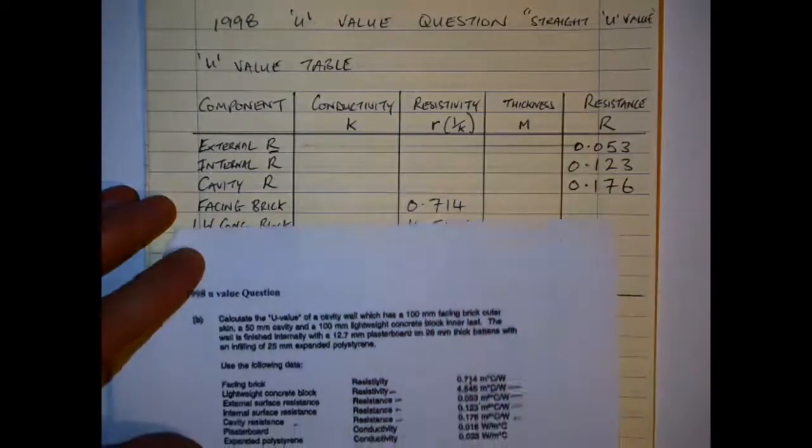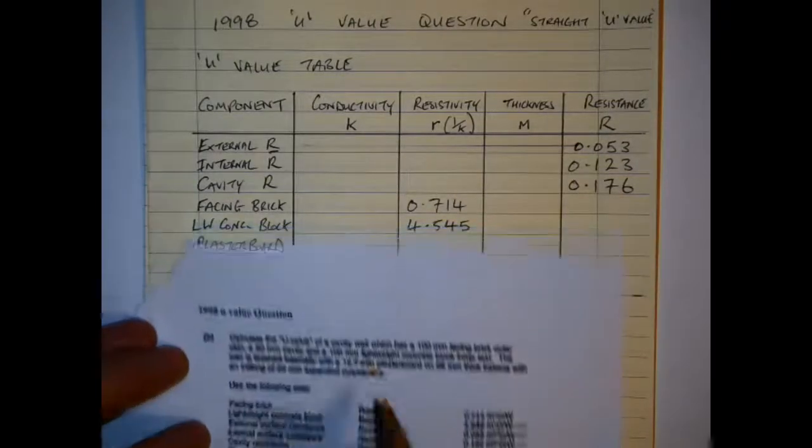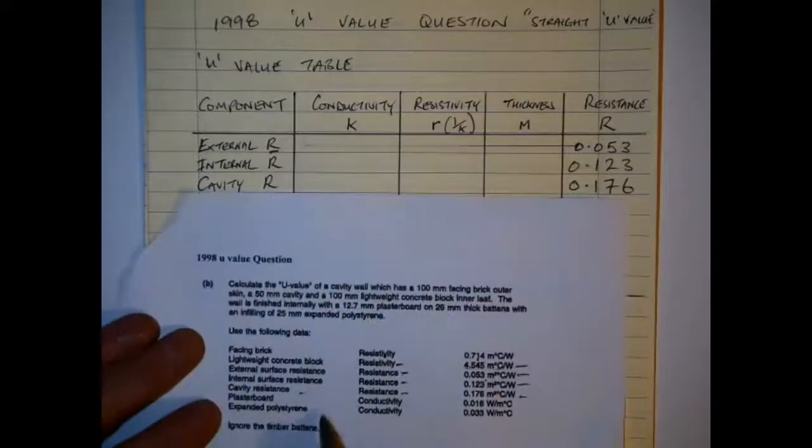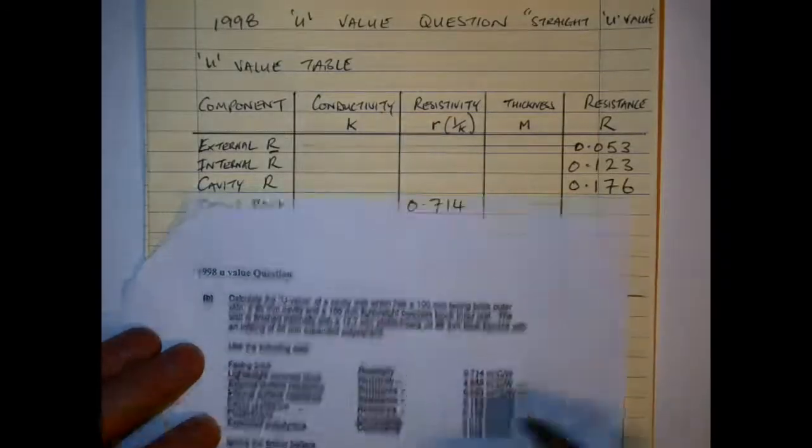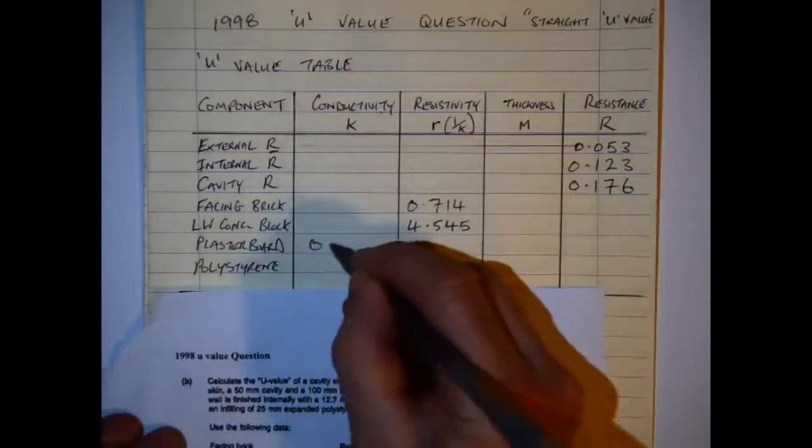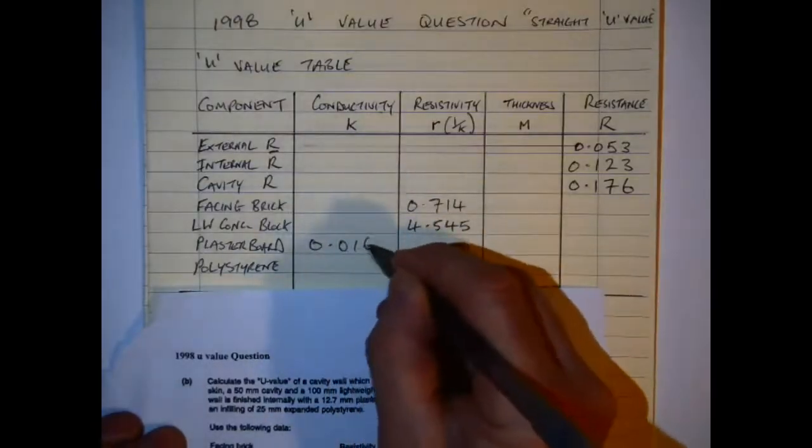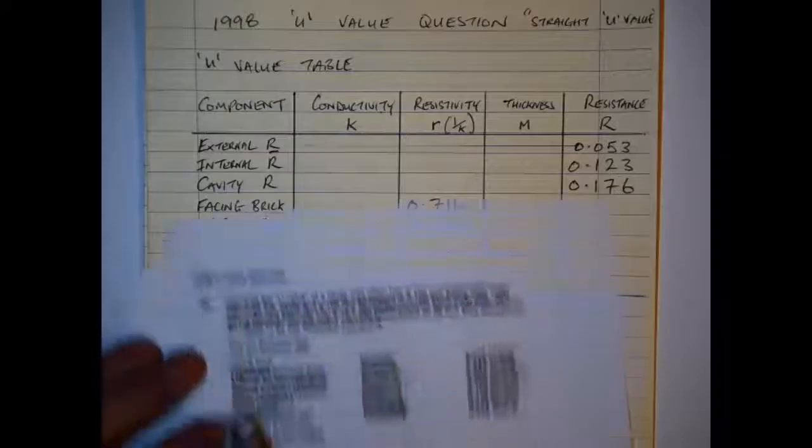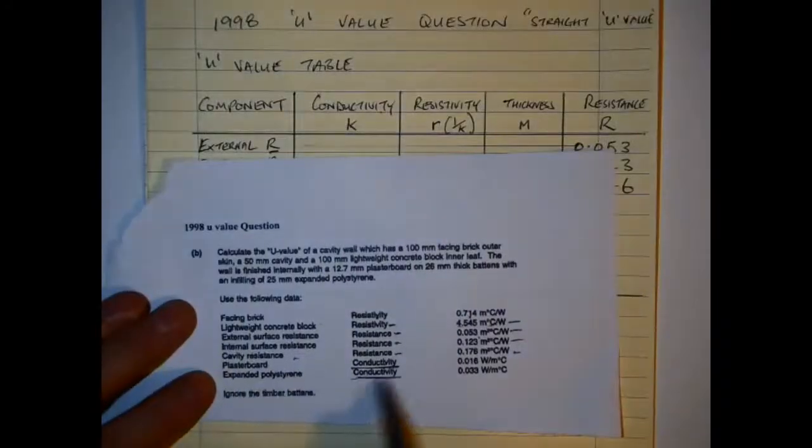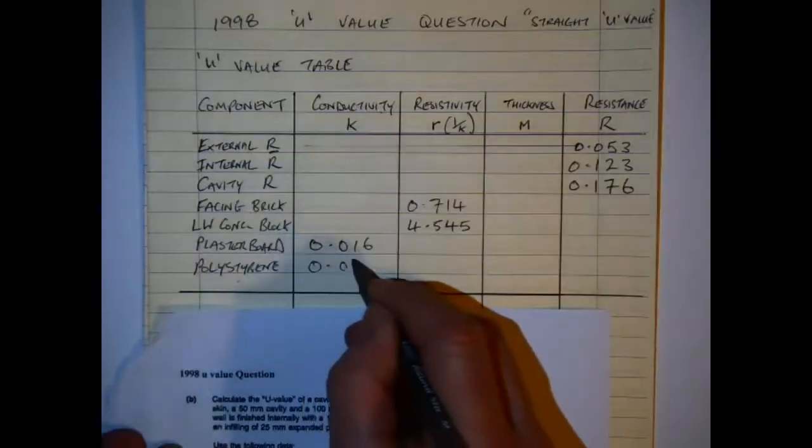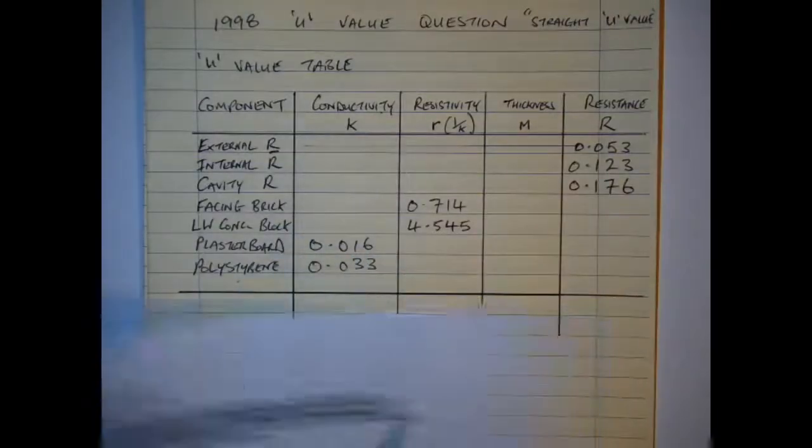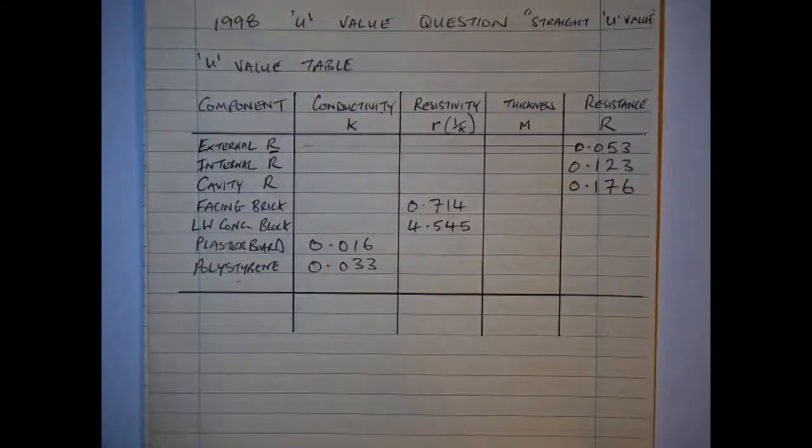Polystyrene is 0.033 and it's a conductivity value, so I'll place that in there. Now after this here I need to look at thicknesses of these materials in order to complete out the calculation, and the materials are measured in meters.